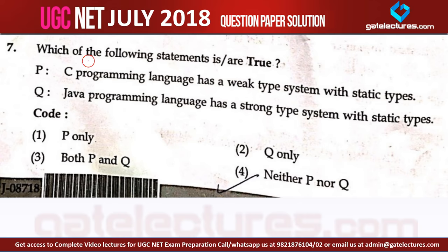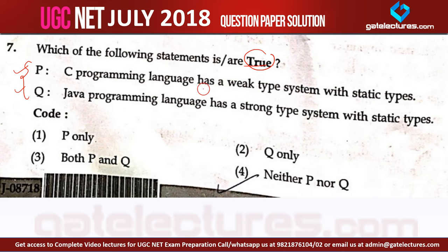Number 1: which of the following statements is or are true? We have to tell, out of statement P and statement Q, which is true. Option P is saying: the C programming language has a weak type system with static typing. We should know what is the concept of a weak type system and what is static typing.